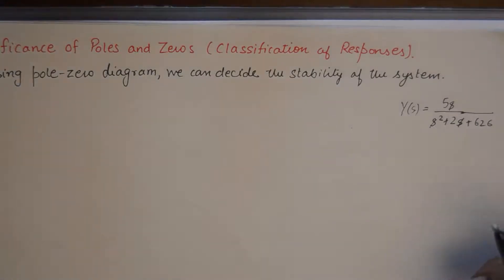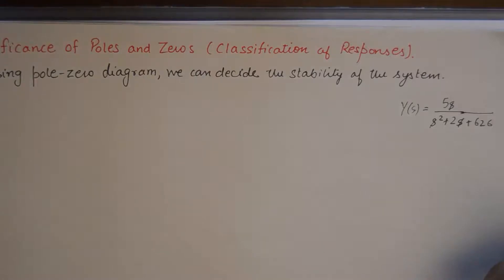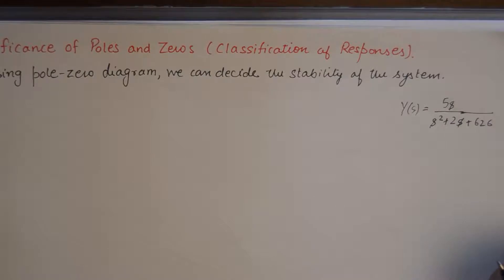Using the pole-zero diagram studied in the previous tutorial, we can decide the stability of the system. In this tutorial, we'll discuss the behavior of the network for different positions of poles and zeros on the S-plane, and see the rationale behind deciding the criteria of stability.